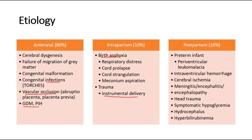Postpartum causes also consist of 10% of all the cases. These include preterm infant, which could be associated with periventricular leukomalacia — the ischemic necrosis of the periventricular white matter — intraventricular hemorrhage, cerebral anoxia or ischemia, CNS infections such as meningitis or encephalitis, trauma to the head, symptomatic hypoglycemia, hydrocephalus, or hyperbilirubinemia, which causes kernicterus in the baby.